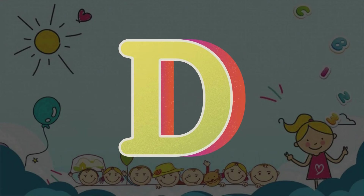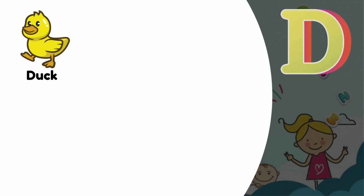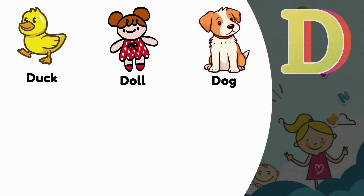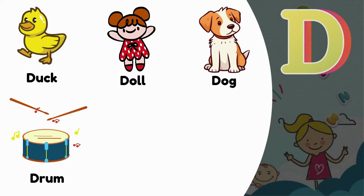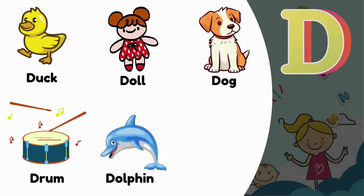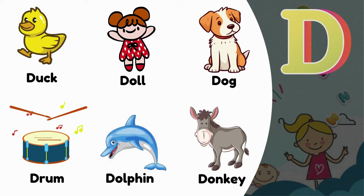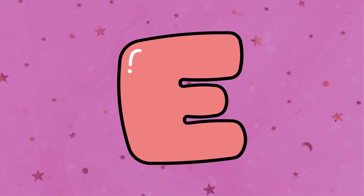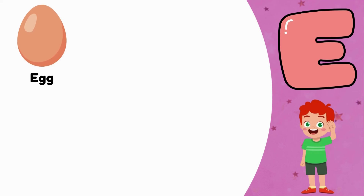D. D is for Duck. D is for Doll. D is for Dog. D is for Drum. D is for Dolphin. D is for Donkey.